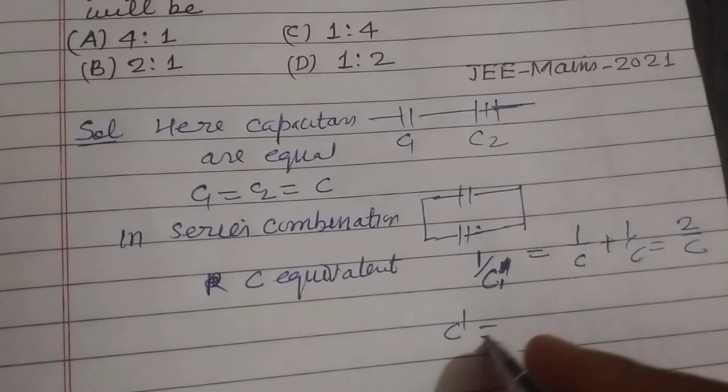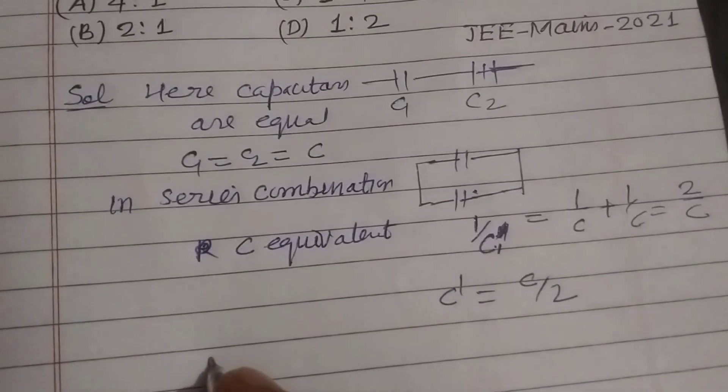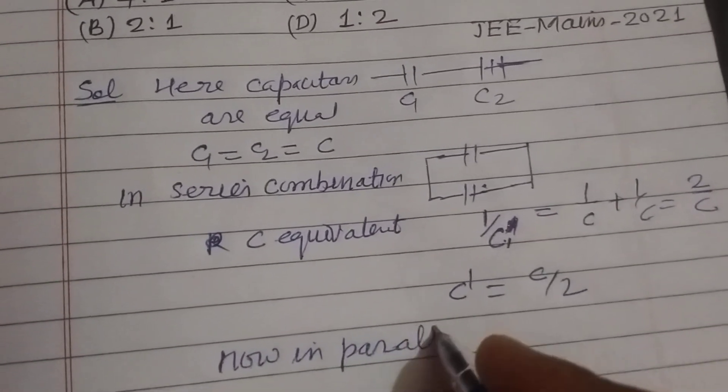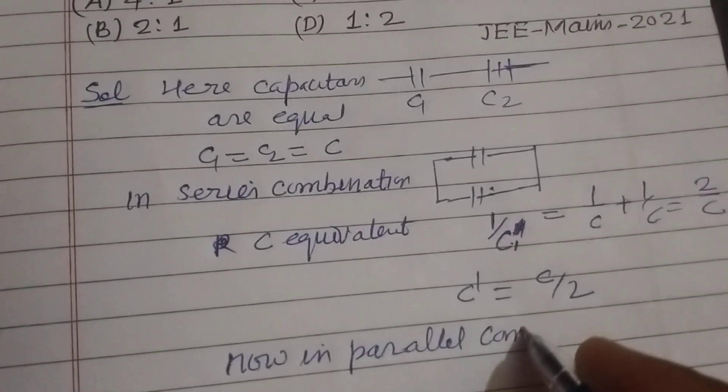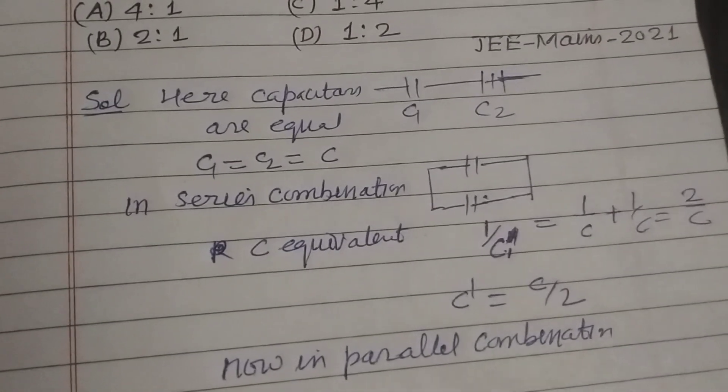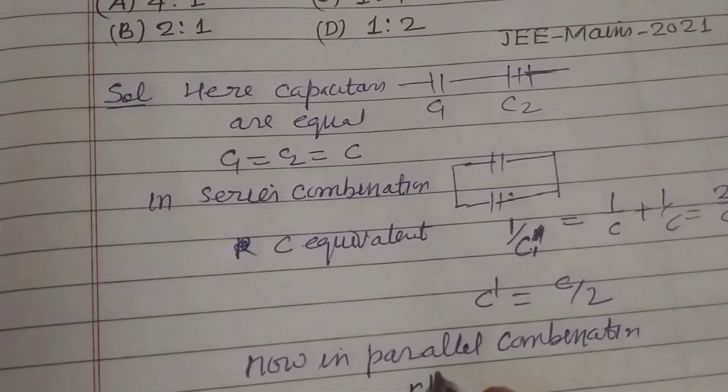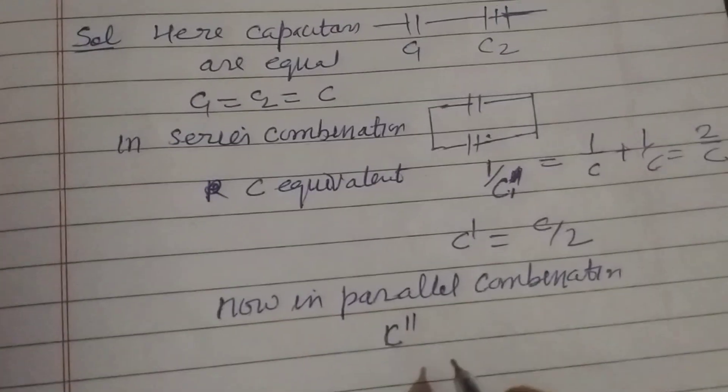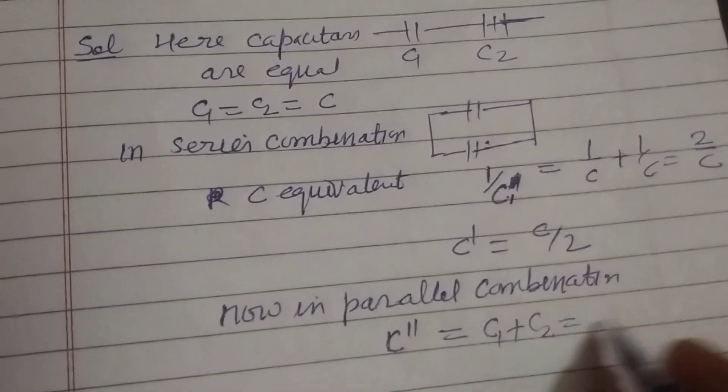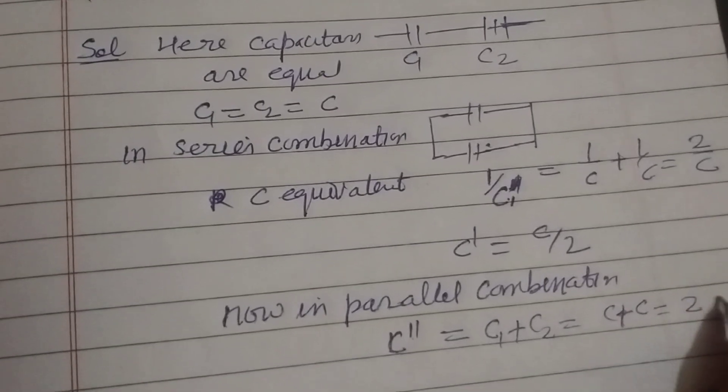Now in parallel combination, equivalent capacitance is C double dash equal to C1 plus C2, this is C plus C, so 2C.